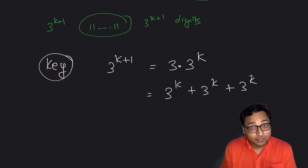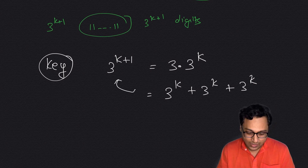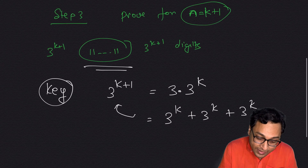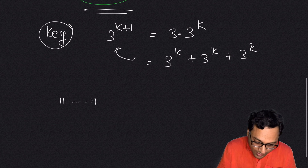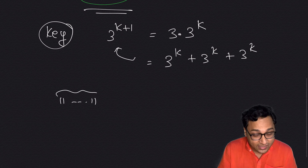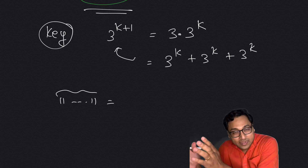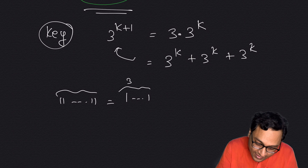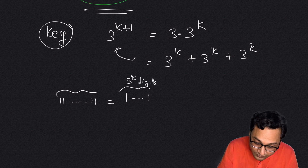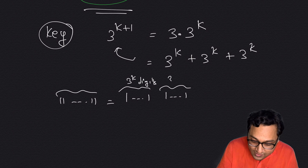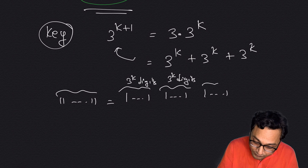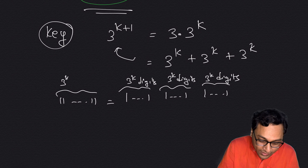Take the 3^(k+1)-digit repunit of 1s and split it into 3 blocks. Each of these blocks contains 3-to-the-power-k digits. In total we have 3^(k+1) digits, which checks out.